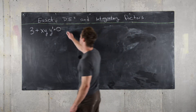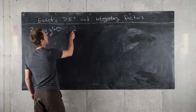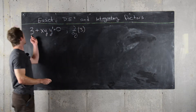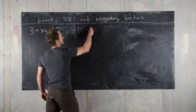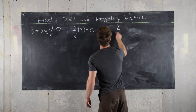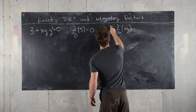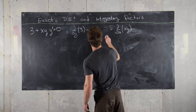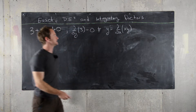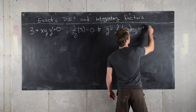The first thing that we notice is that if you take the derivative with respect to y of 3, that's equal to 0. But if you take the derivative with respect to x of x times y, that's equal to y, and these are not equal. So that means this is not an exact differential equation.